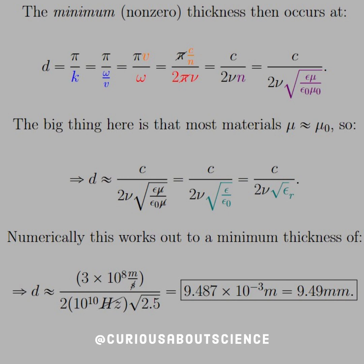But the big thing here is that most materials mu is equal to mu_0. So we can approximate d as c over 2 nu square root of epsilon over epsilon_0, which is equal to epsilon_r, the dielectric constant, of course, relative.